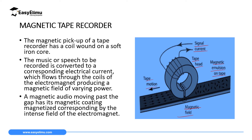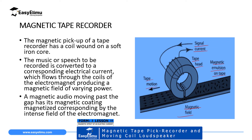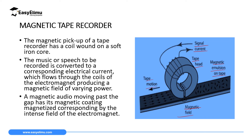To record a video or sound using this tape recorder, the sound or video signals are first converted into electrical signals by a microphone or a camera. If you want to record a voice, you use a microphone to convert the sound into a signal; if you want to record a video, you use a camera. These electrical signals are then sent to the tape recorder, where they are used to create a magnetic field in the record head.